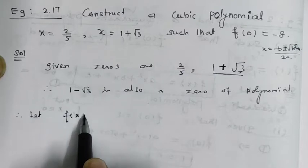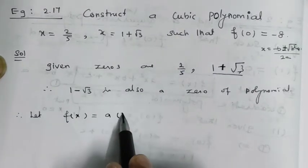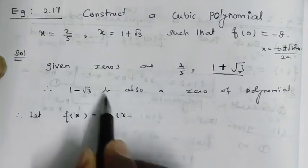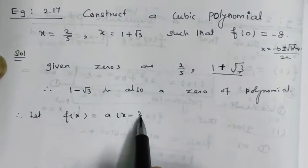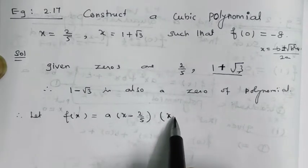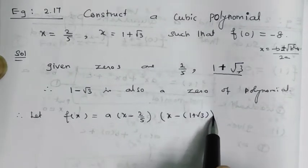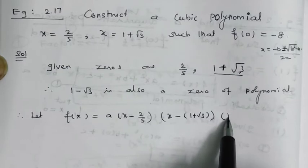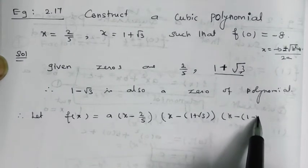Let f(x) equal to a, a constant, multiplied by (x minus 2/5), (x minus (1 plus root 3)), and (x minus (1 minus root 3)).